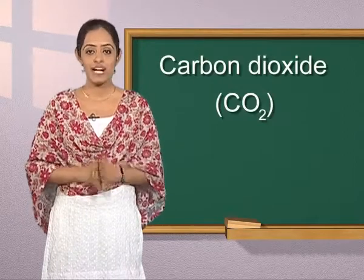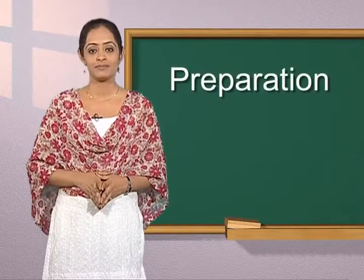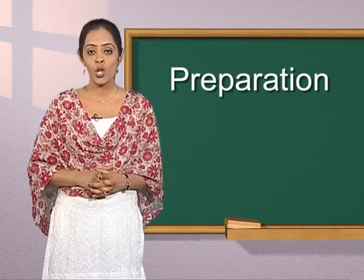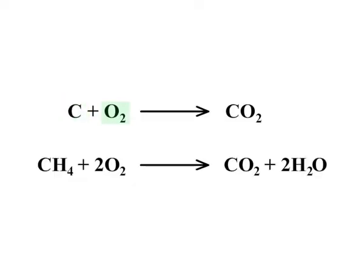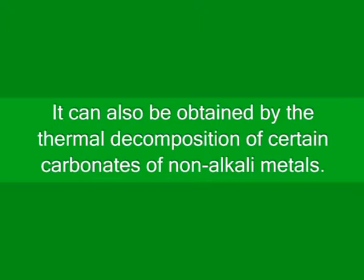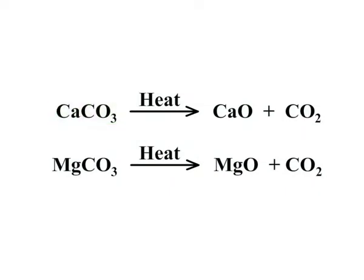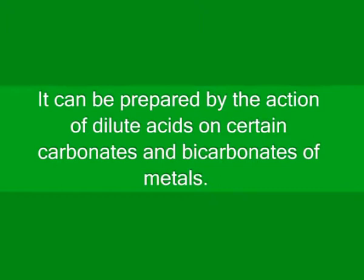Carbon dioxide can be prepared by the combustion of coal, coke, and a number of hydrocarbons which act as fuels. Carbon reacts with oxygen to form carbon dioxide, and methane reacts with oxygen to form carbon dioxide and water. It can also be obtained by the thermal decomposition of certain carbonates of non-alkali metals. Calcium carbonate on heating decomposes to form calcium oxide and carbon dioxide. Magnesium carbonate decomposes on heating to form magnesium oxide and carbon dioxide. It can be prepared by the action of dilute acids on certain carbonates and bicarbonates of metals.